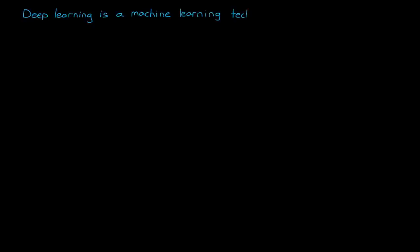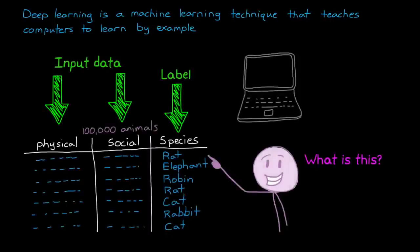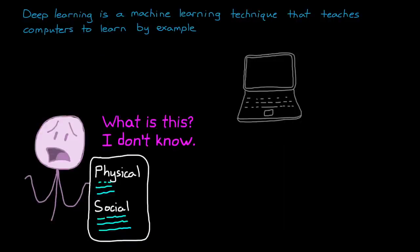At a really high level, deep learning is a machine learning technique that teaches computers to learn by example. Specifically, we're teaching a computer how to perform some classification task by exposing it to known scenarios, and having it automatically adjust its model depending on whether it produced the right response or not. And once we have a sufficiently trained model using enough labeled data, we could input data that we haven't classified yet, and the model will apply the most probable label to it.